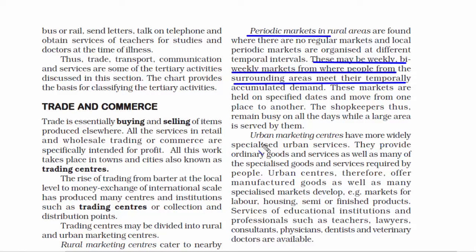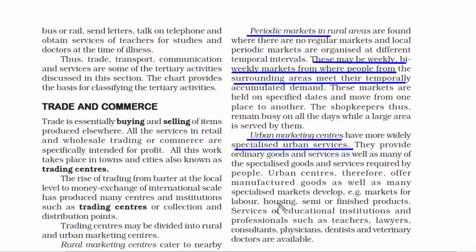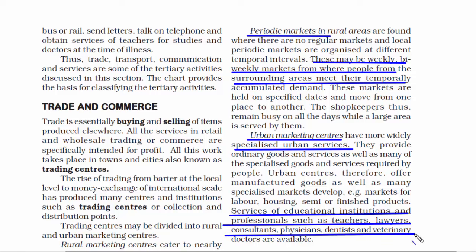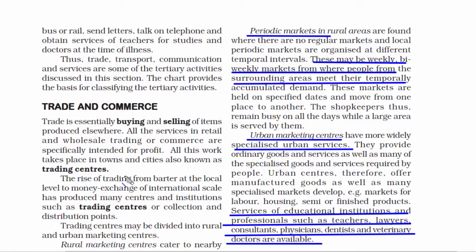Urban marketing centers (UMC) have more widely specialized urban services because urban people have more demands compared to rural people. Since UMCs serve purely the urban crowd, their services have to be wide — educational services, teachers, lawyers, consultants, physicians, dentists, veterinary doctors, etc. You will find all these services available in a city, but it's difficult to find them in a rural area, though things are changing due to various development schemes.